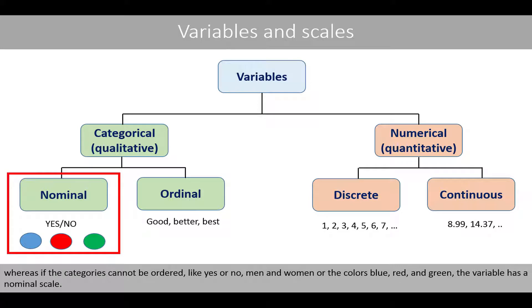Whereas if the categories cannot be ordered, like yes or no, men and women, or the colors blue, red, and green, the variable has a nominal scale.